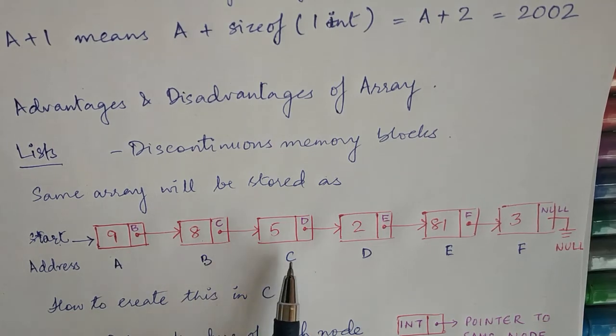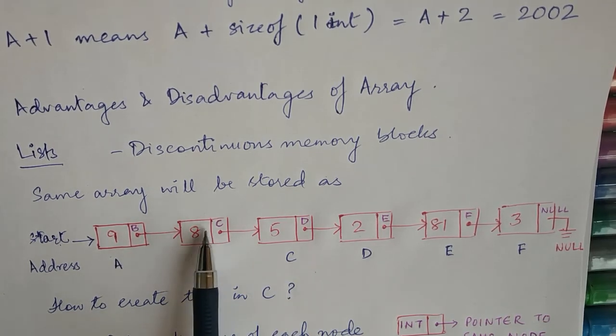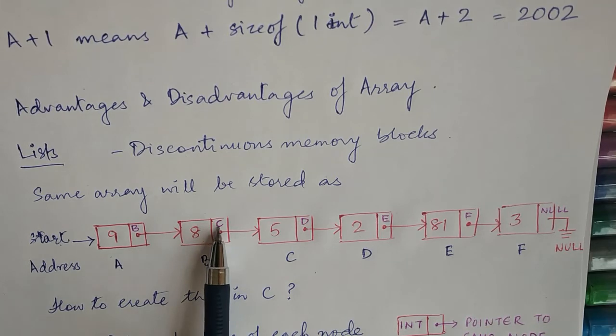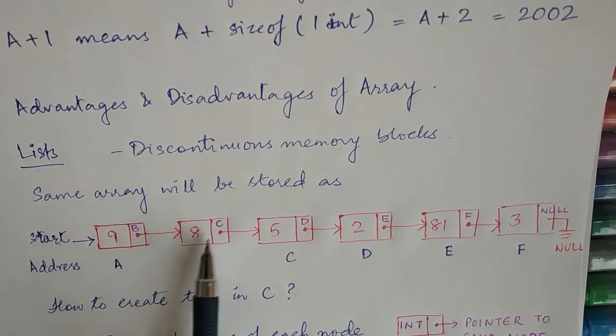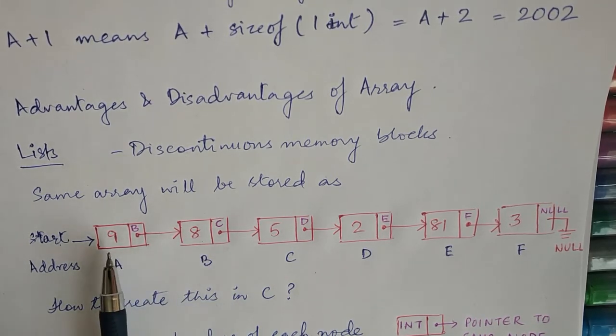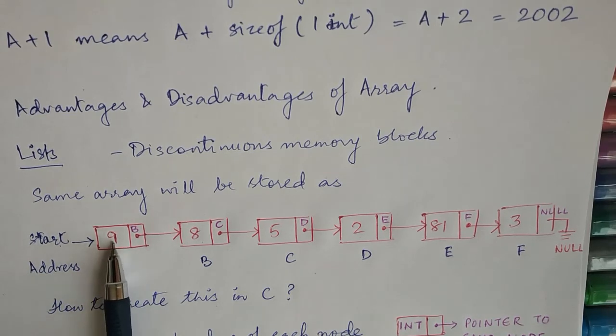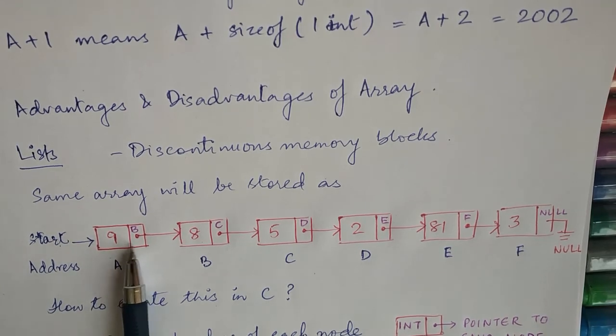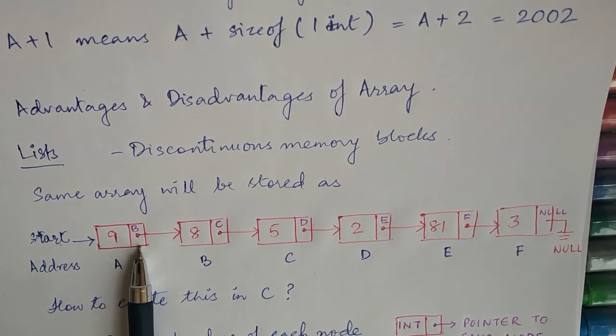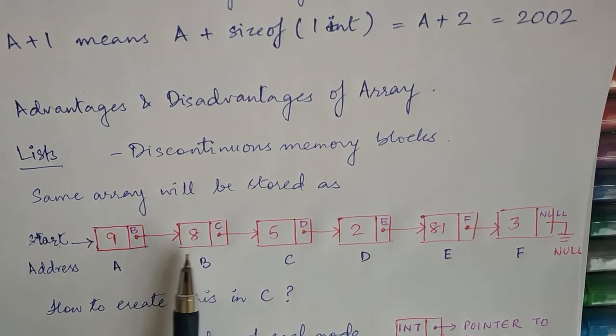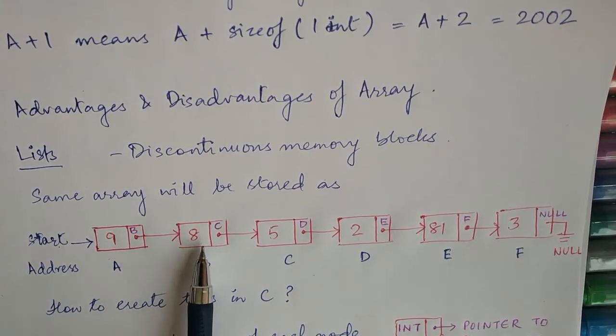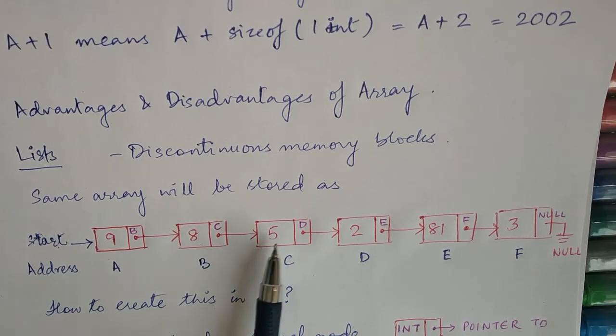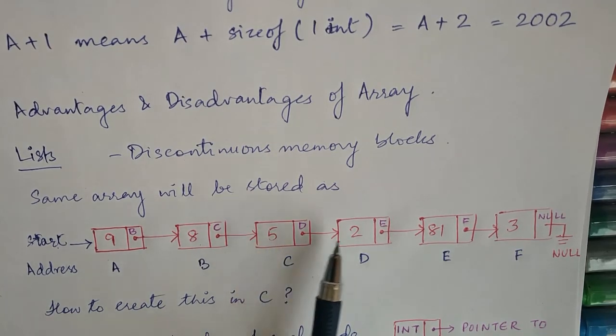9 will have the address of the location of the next element. The next element is 8. We will create a node for 8 dynamically. Then we will put the address of 8 in the next pointer to 9. Similarly, we have 5. The address of 5 is in the next field of 8. So basically, each node consists of two elements.